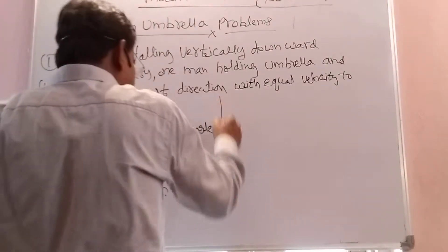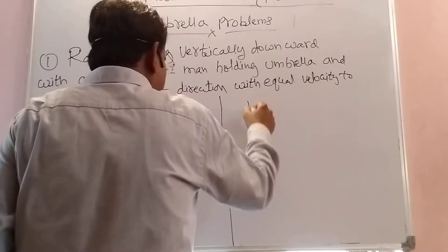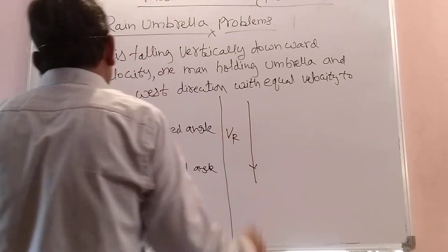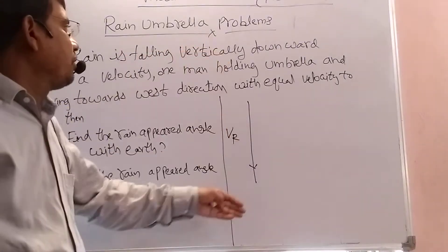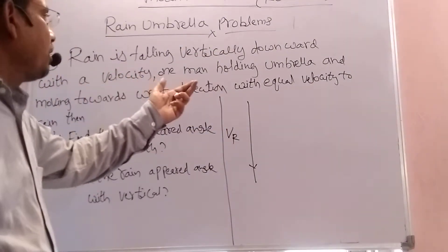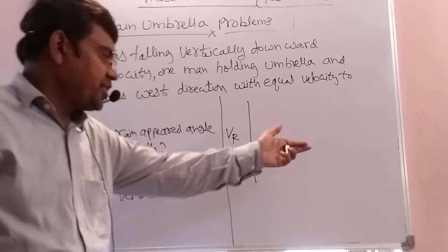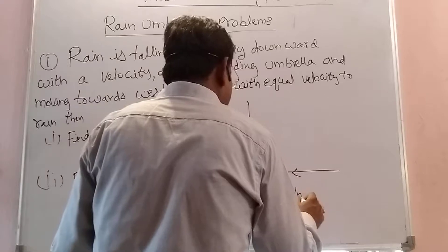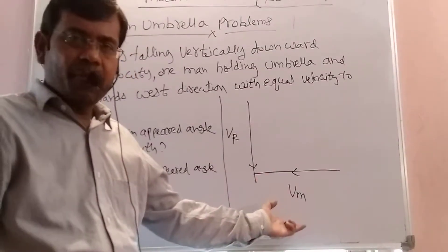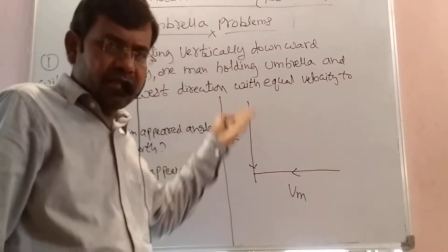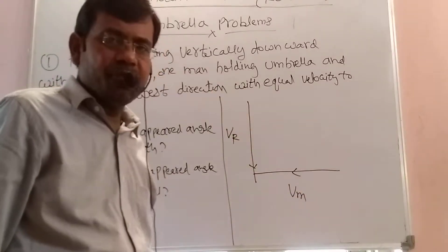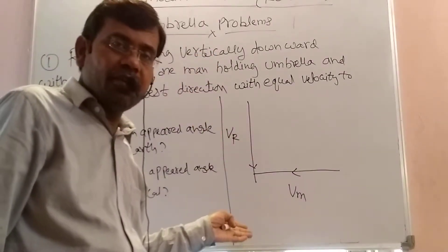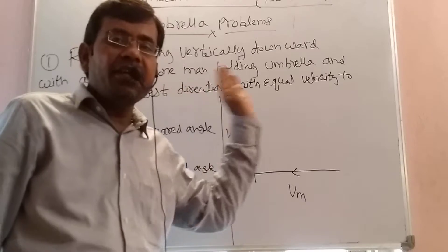For example, here rain is falling vertically downward, so this is our velocity of the rain. A man is holding an umbrella and moving towards the west direction like this — this is the velocity of the man. If the man is at rest, the vertically downward falling rain appears as vertically downward only, because his motion is zero. But when he is moving with some velocity, the rain appears not to be falling vertically downward, even though it actually is.